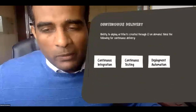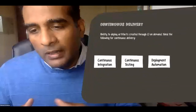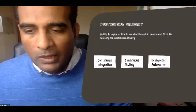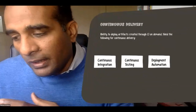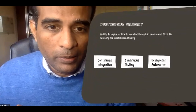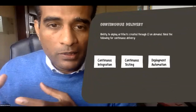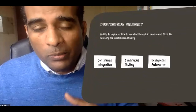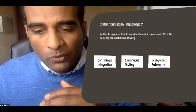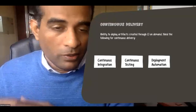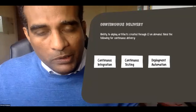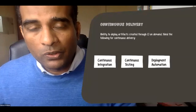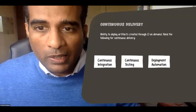Continuous delivery picks up where continuous integration left off. It's all about building artifacts that can be deployed to test or production environments. It has three components: good continuous integration, continuous testing — ensuring every check-in runs automated tests to catch regressions — and deployment automation. For example, with a web application you want to be able to create artifacts and deploy them to websites so users can start using them.